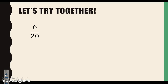Remember that our factors are the numbers that multiply together to make up the number that we're trying to get. Let's start with 6. We know that 1 and 6 will give you 6, and we also know that 2 and 3 will give you 6. Those are our factors for 6.